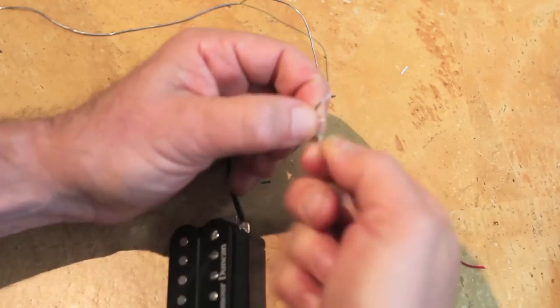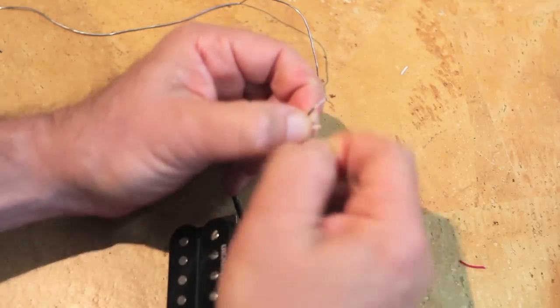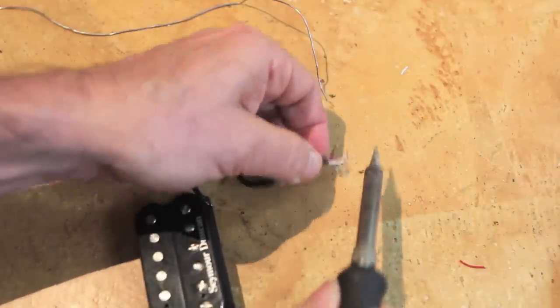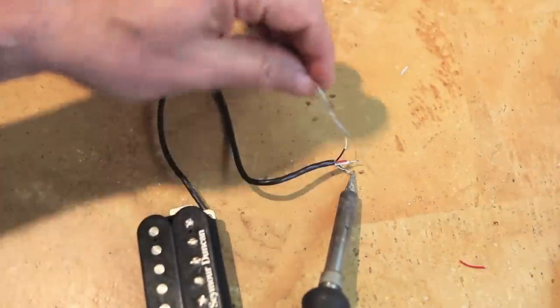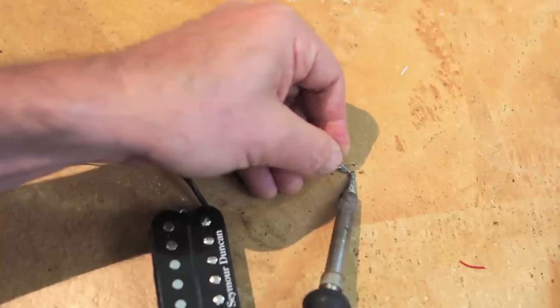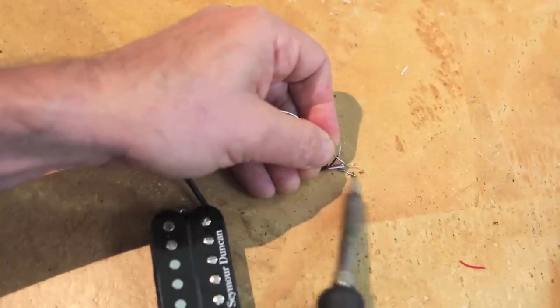You use the iron to heat the area to be soldered, and then touch the solder to the surface once it's hot enough. Okay, I've got the white and red connected.